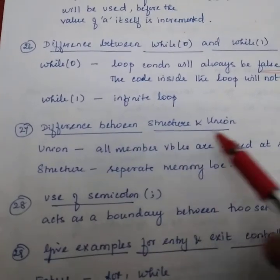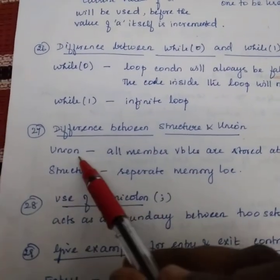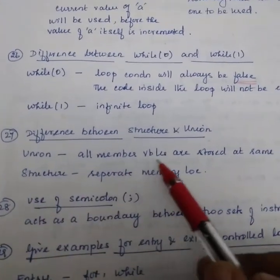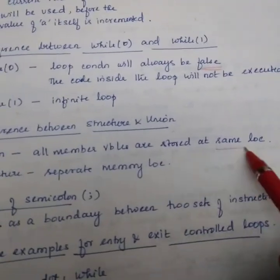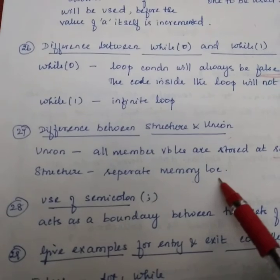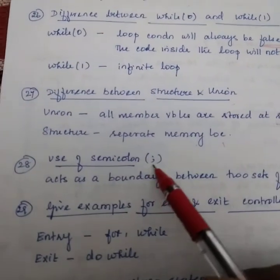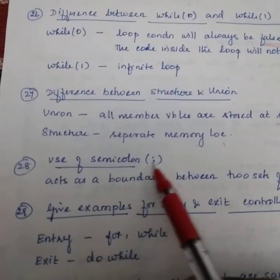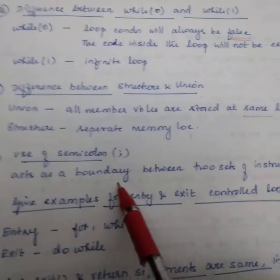Difference between structure and union. In union, all member variables are stored in same location, whereas in structure, separate memory locations. Use of semicolon in programming. The semicolon acts as a boundary between two set of instructions.